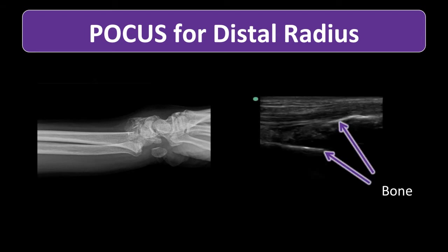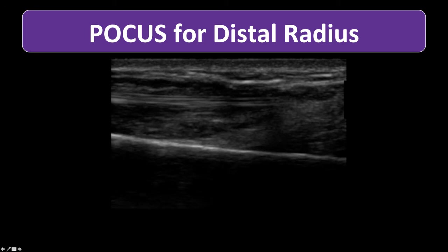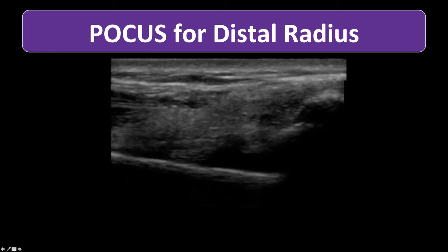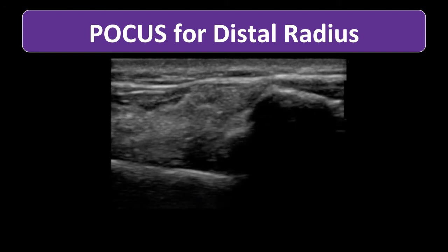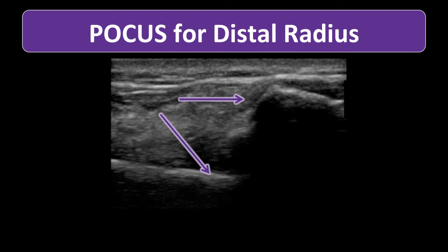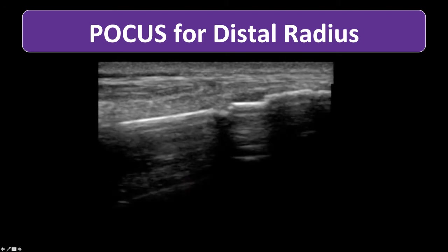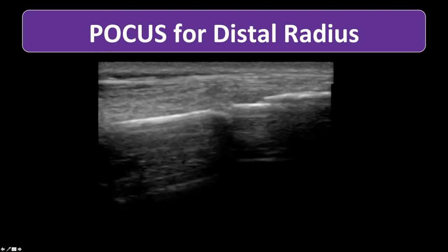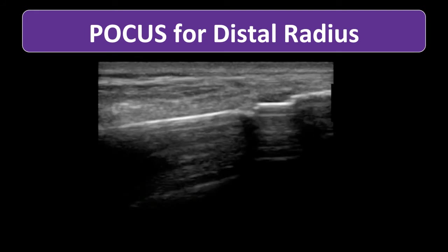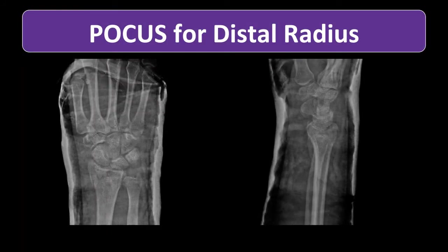Now let's look at what this wrist looks like using point-of-care ultrasound. As a reminder, the probe marker on screen left is pointed towards the patient's head, so structures on screen left are more proximal and structures on screen right are more distal. The fractured bone is easily visualized as a disruption in the cortex — a disruption of the smooth bright line. In real time, we can reduce the wrist and do serial ultrasounds watching the bony cortex come closer and closer together. Post-reduction, we can see the bony cortex is aligned again. When we see the edges approximate, we can cast the patient and send them for follow-up x-ray, which confirms an anatomic reduction.